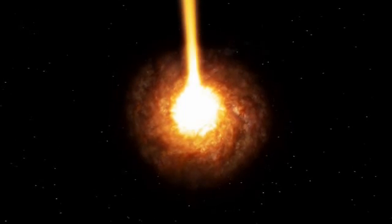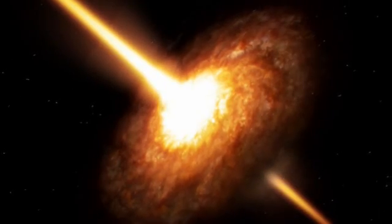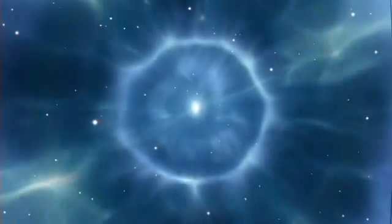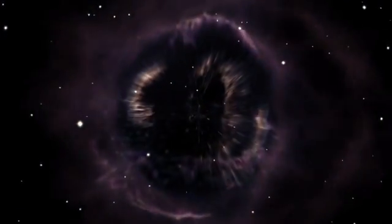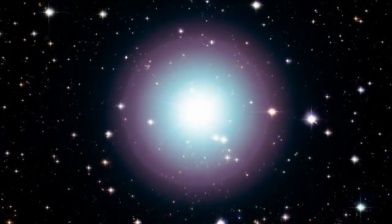Black holes come in different sizes. We've had solid evidence for the smaller ones since the 1970s. These form when a huge star explodes at the end of its life. As the outer layers are blown away, the star's core collapses in on itself, forming an incredibly dense ball.